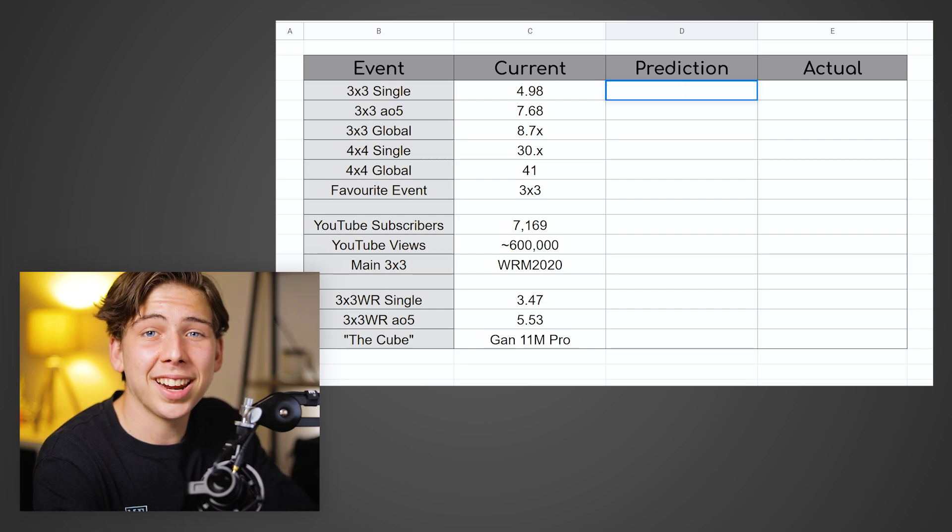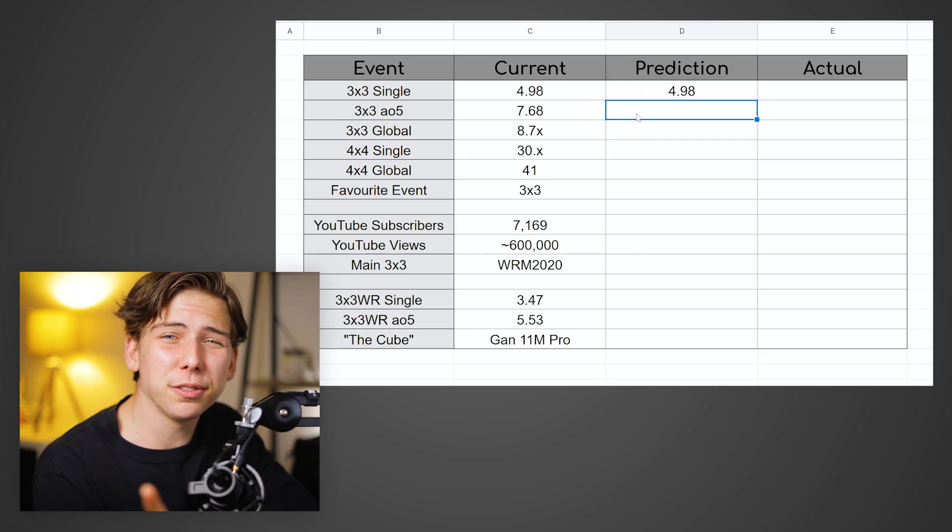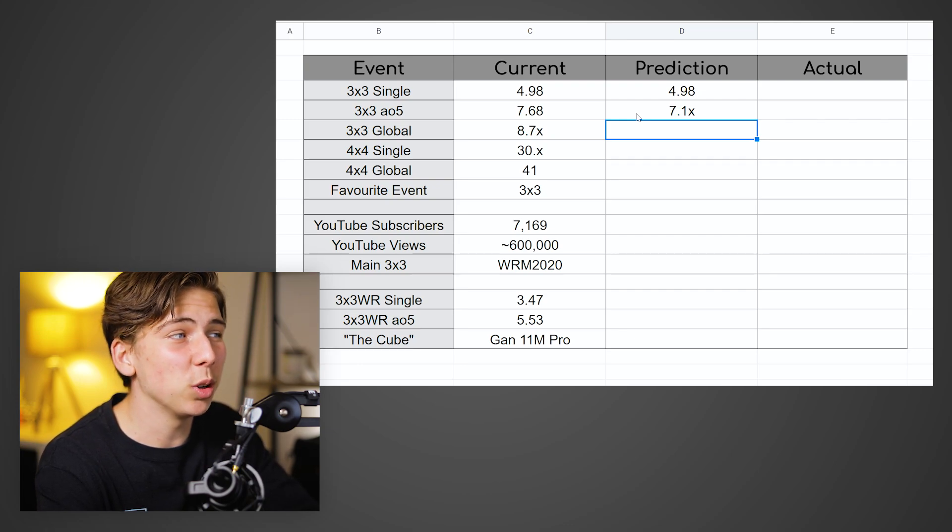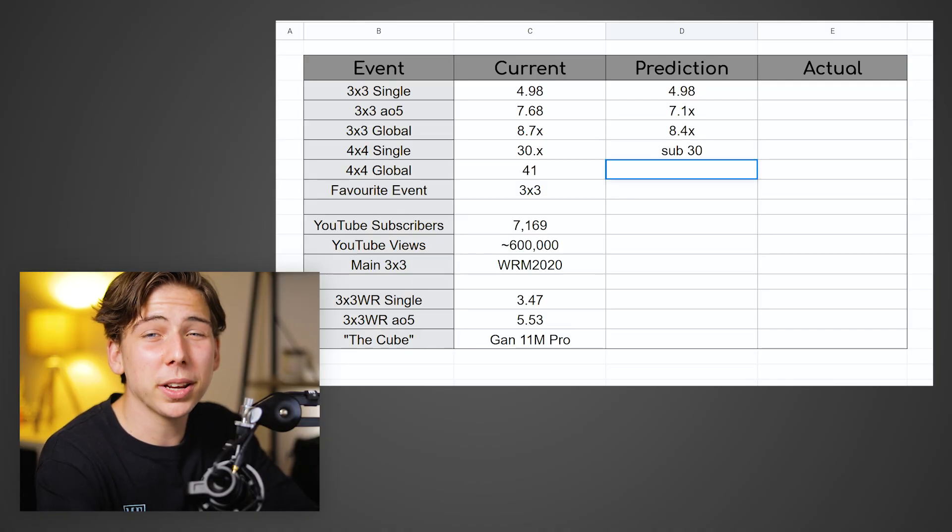As much as I do hope to improve over the next year, my 4.98 single is something I don't think I'm gonna break, to be quite honest. So we're gonna put 4.98. My average of five, though, I've nearly broken a lot of times, and I actually might have broken this. I don't know if this is updated or not, but I'm pretty sure I can get like a 7.1 average, so fingers crossed. I'm pretty happy with my speed right now on the cube and I'm not that motivated to keep improving, but I do think I can get to probably 8.4 or so in the next year. Maybe, probably not, we'll see.